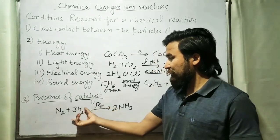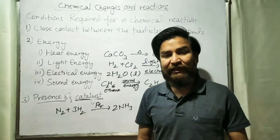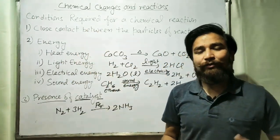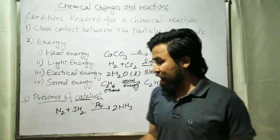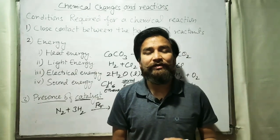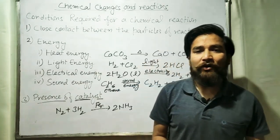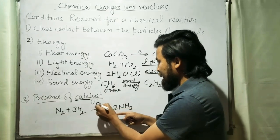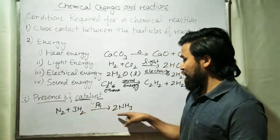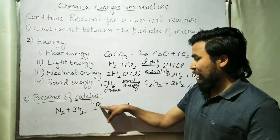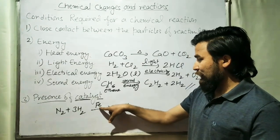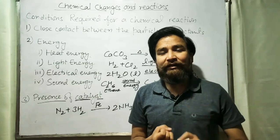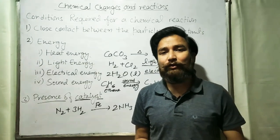If iron is not used, the reaction will become very slow — it will take place but not that fast. Remember these three points: the conditions required for a chemical reaction, and especially the definition of catalyst. The catalyst is a substance which increases or decreases the rate of reaction without actually participating in the chemical reaction. Iron will remain unaffected — nitrogen and hydrogen will be converted to ammonia, but iron will remain as it is. Remember: a catalyst does not undergo any chemical change during a chemical reaction.